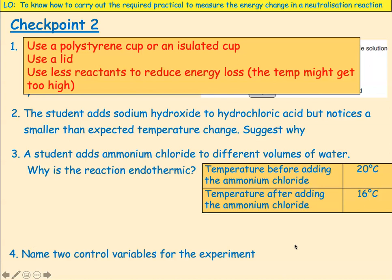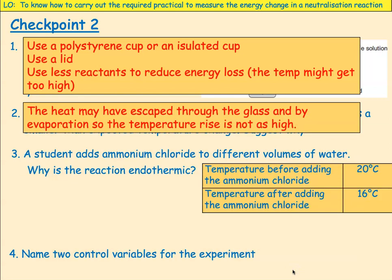Use a polystyrene or insulated cup — that means all the temperature you're measuring is from the reaction and you're not losing it to the environment. Use a lid to stop the heat being released. Use less reactants to reduce energy loss. If a student notices a smaller than expected temperature change when adding sodium hydroxide to hydrochloric acid, the heat might have escaped through the glass or through evaporation, so the temperature rise is not as high as it should be.